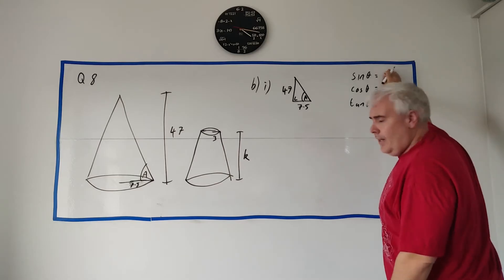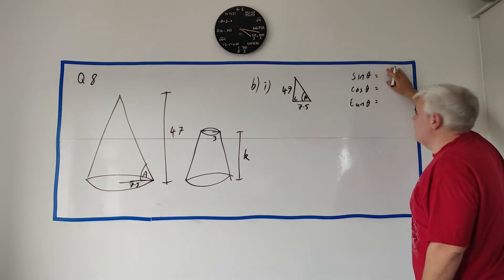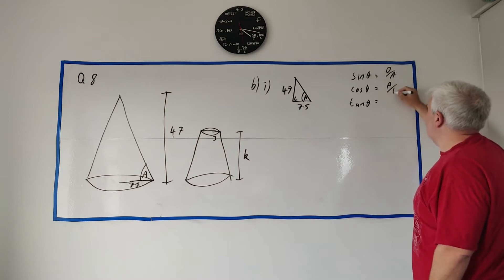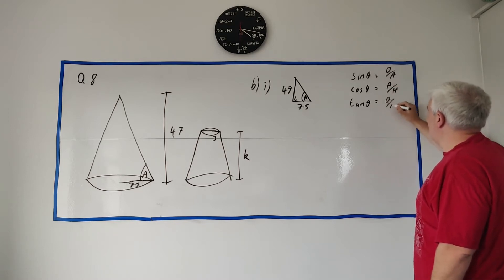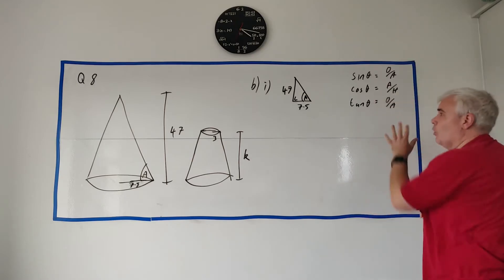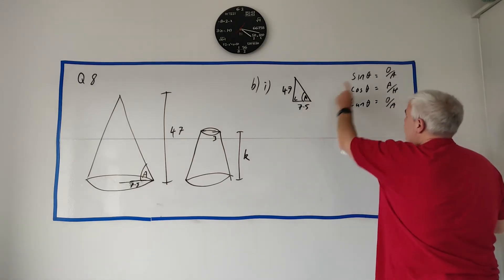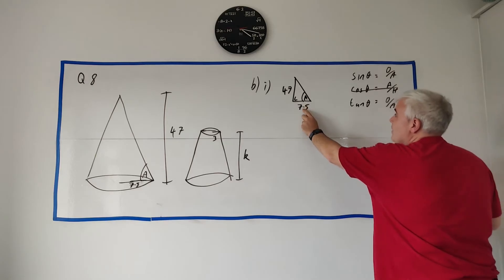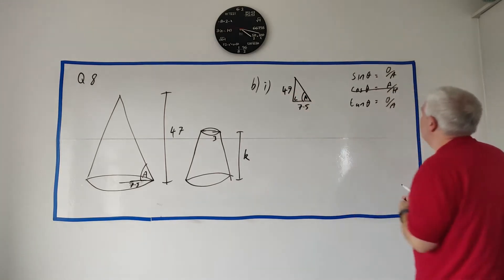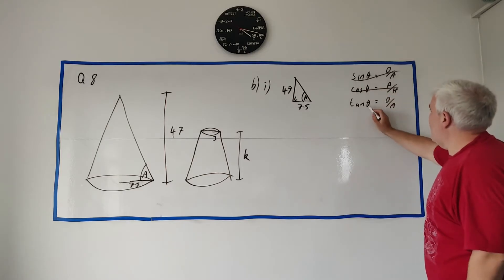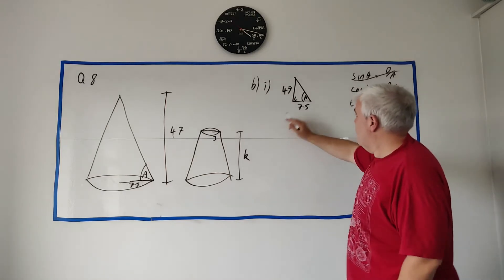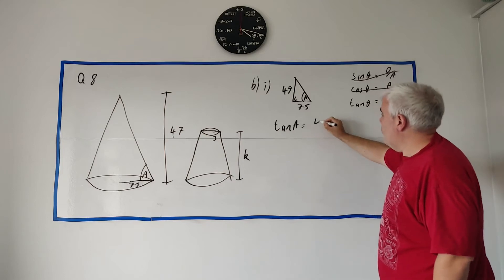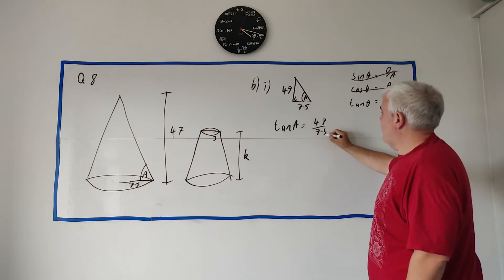When dealing with right-angle triangles, think straight away of sine, cosine, and tangent. A useful mnemonic: O/H, A/H, O/A. In this case we have an angle, the opposite side (47), and the adjacent side (7.5) — that's tangent. So we use tan A = opposite/adjacent.